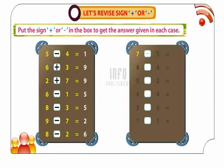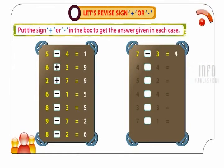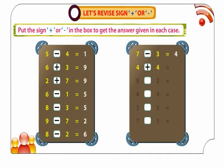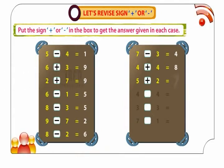7 minus 3 is equal to 4. 4 plus 4 is equal to 8. 5 plus 2 is equal to 7.